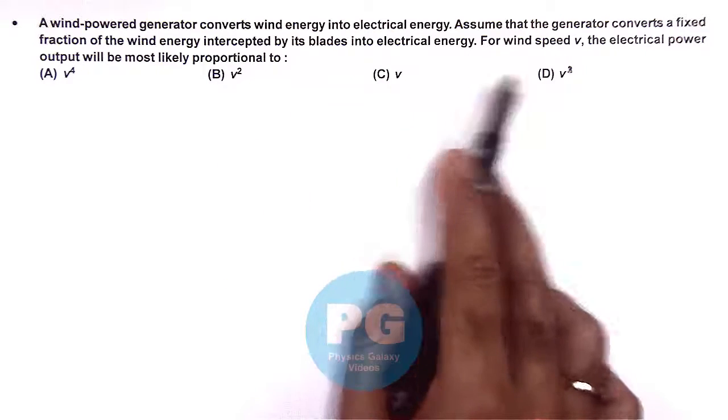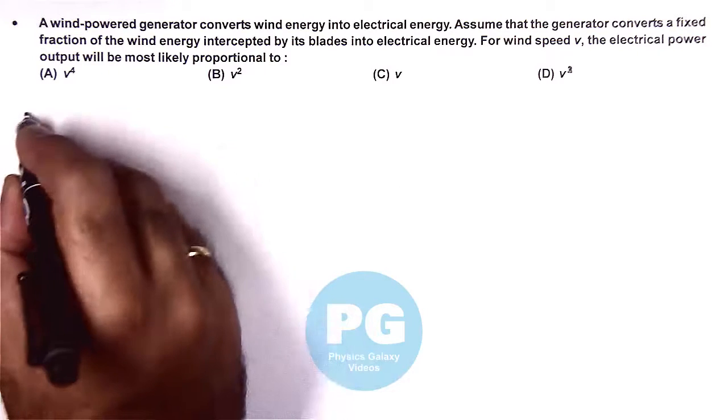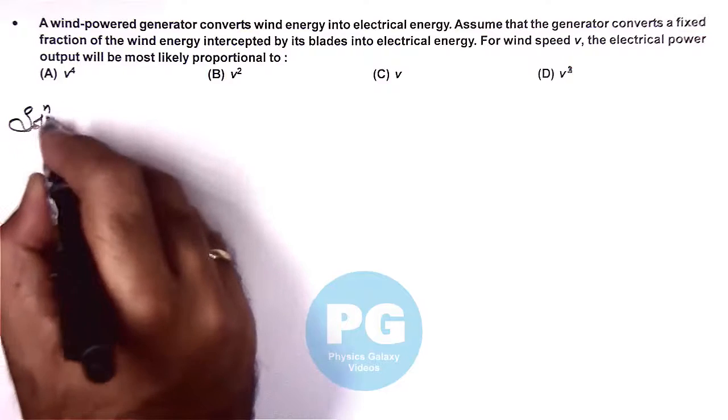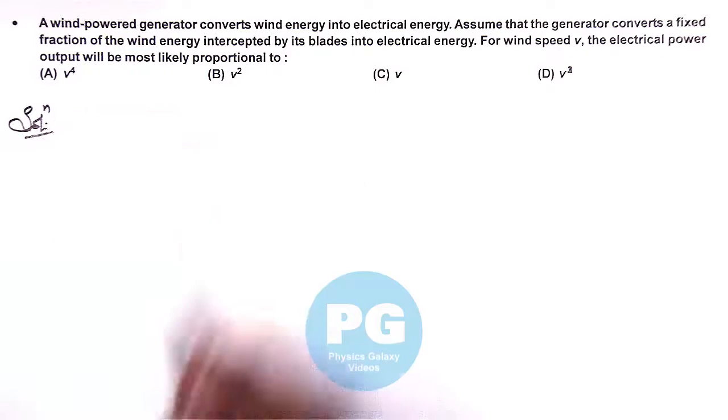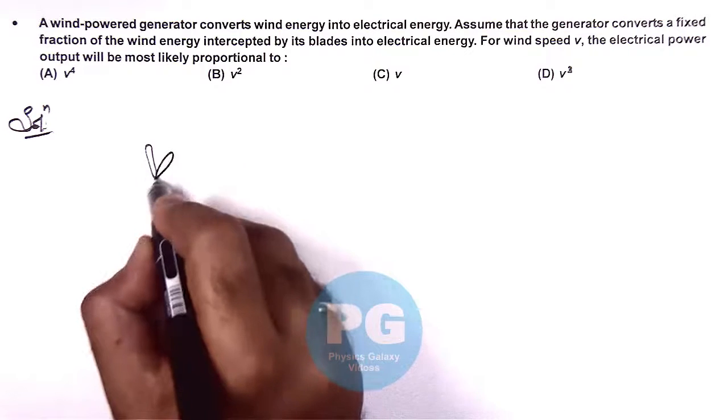For wind speed V, the electrical power output will be most likely proportional to... This question is exactly the same as an illustration we have taken in theory videos. Let me analyze the same once again.